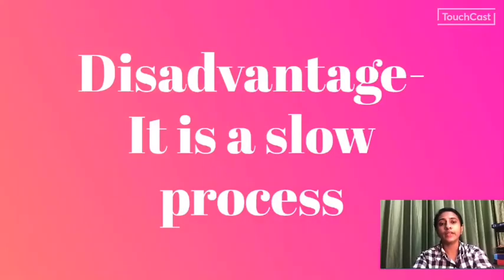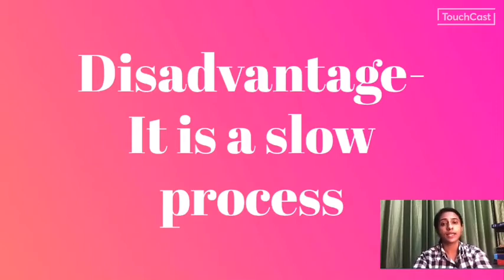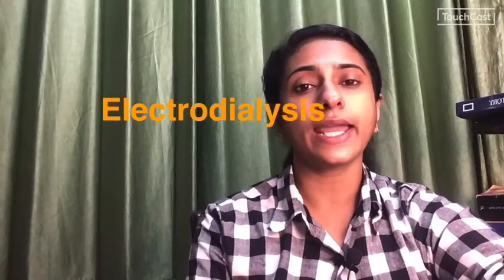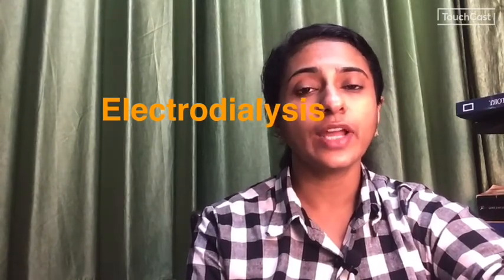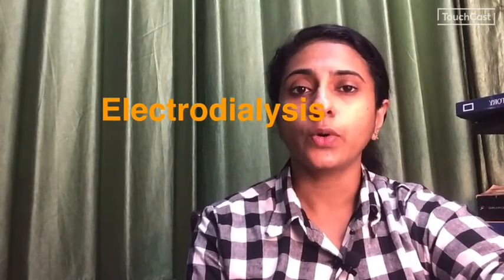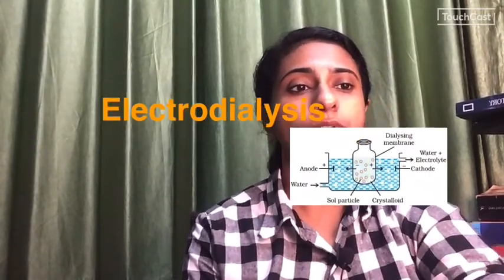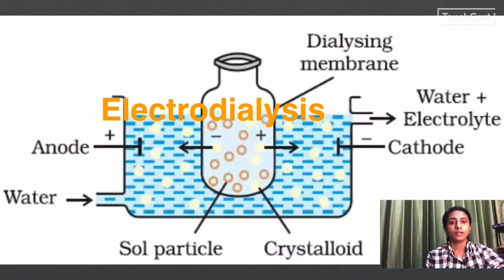A disadvantage of dialysis is that it is a very slow process. To speed it up, we use Electro-Dialysis — the second method of purification. In electro-dialysis, an electric field is applied to the dialysis setup, which speeds up the movement of ions through the membrane, making the process much faster than simple dialysis.